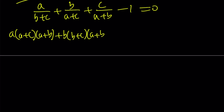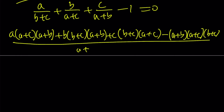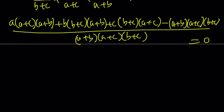And c must be multiplied by (b+c)(a+c). Then at the end, minus, we're going to have the three-way product (a+b)(a+c)(b+c), all divided by (a+b)(a+c)(b+c), and the whole thing is equal to 0. This is nice because it just means that the numerator is equal to 0, not the denominator.